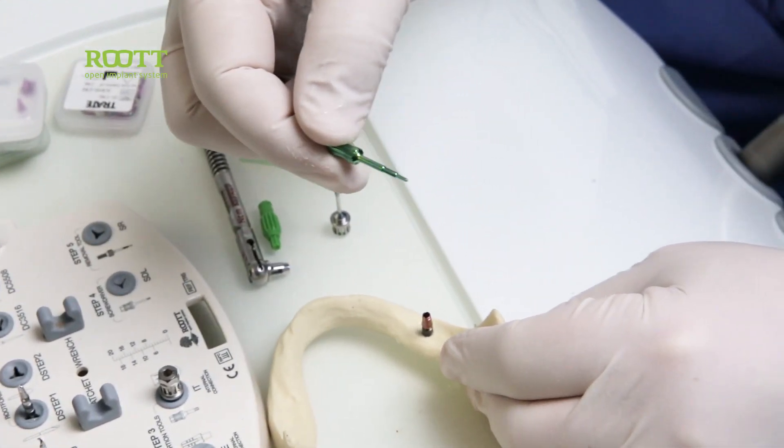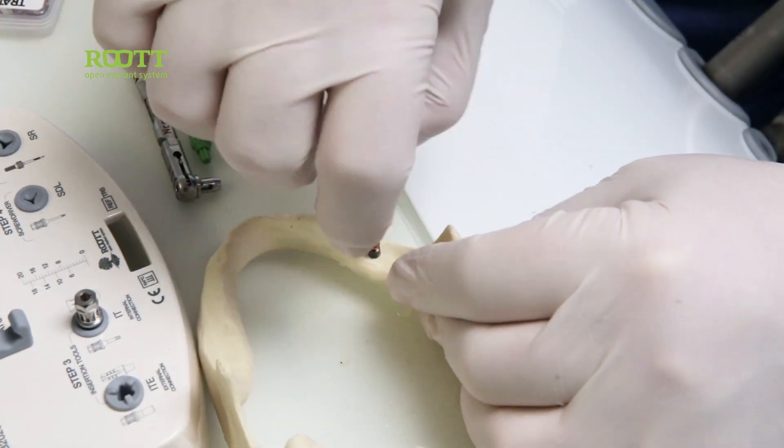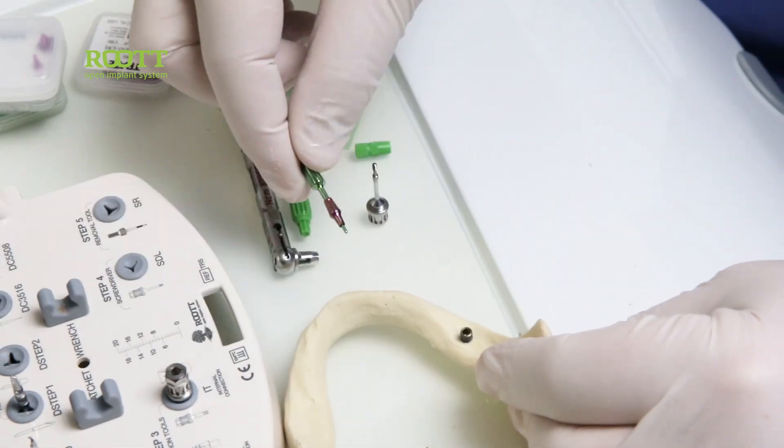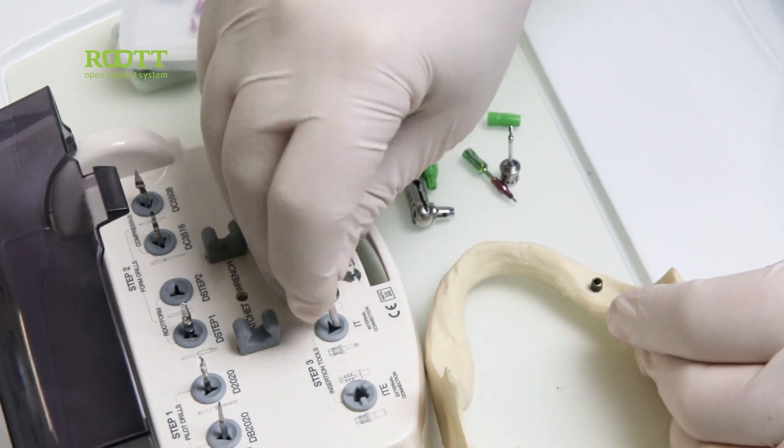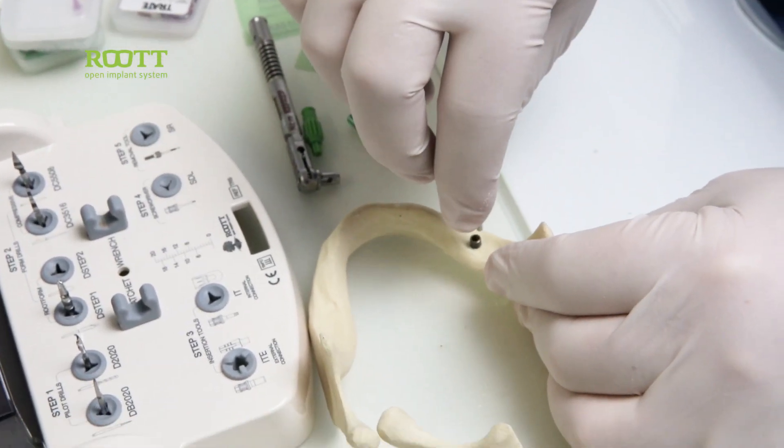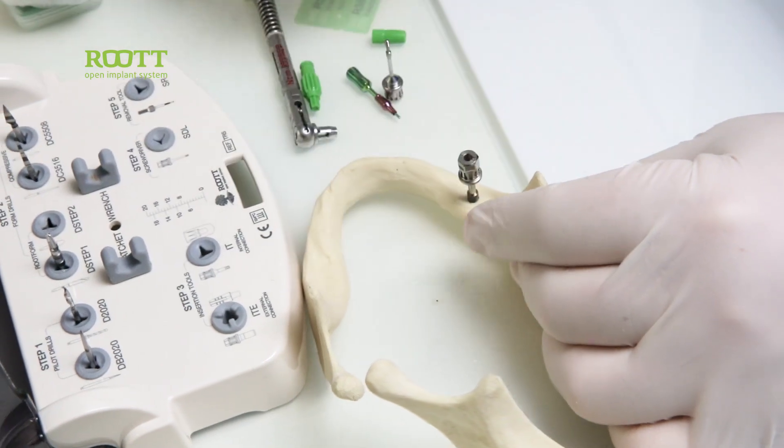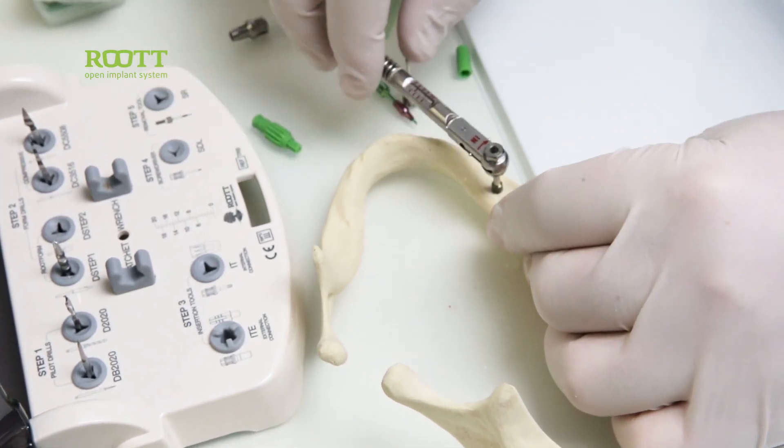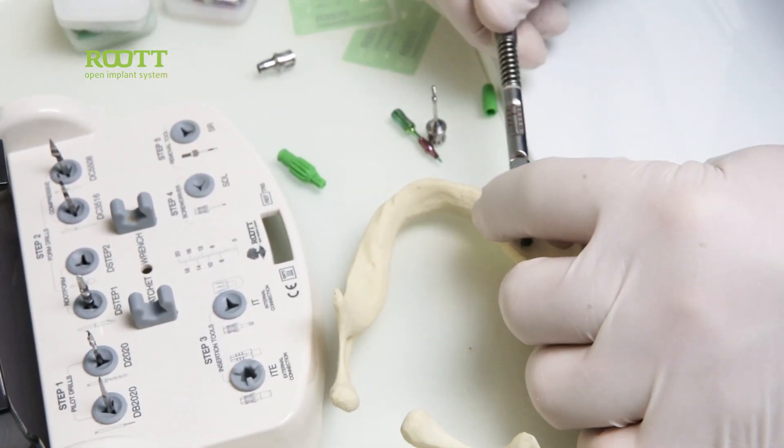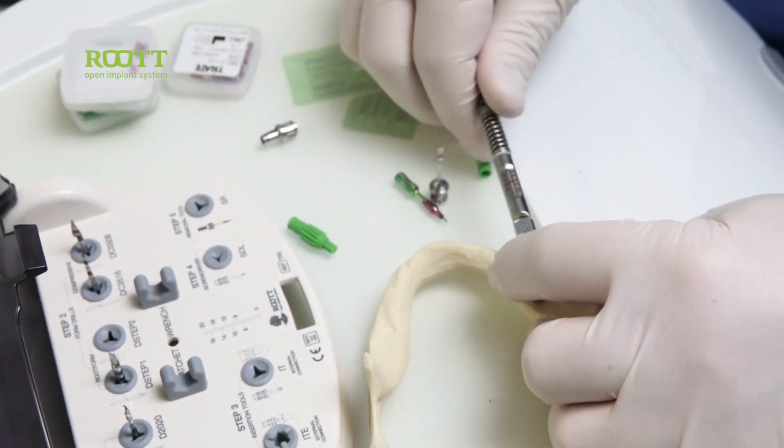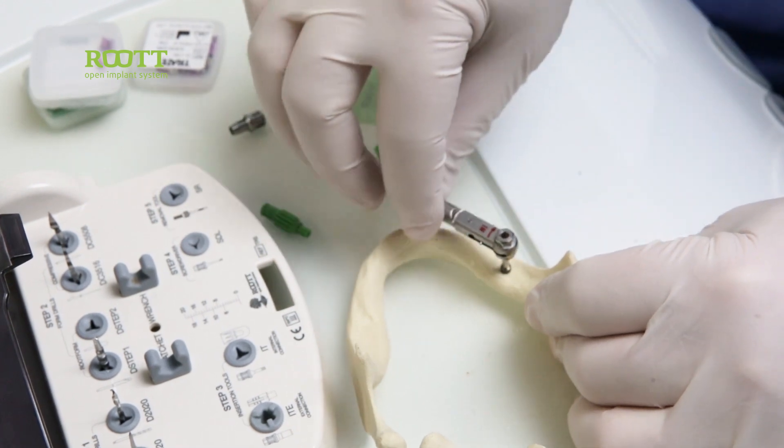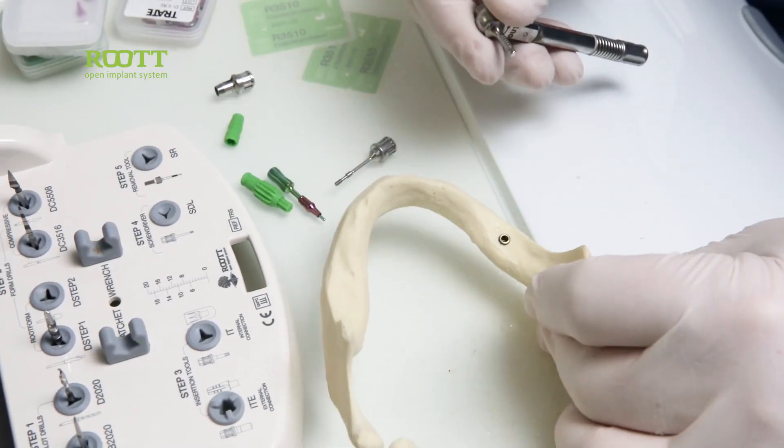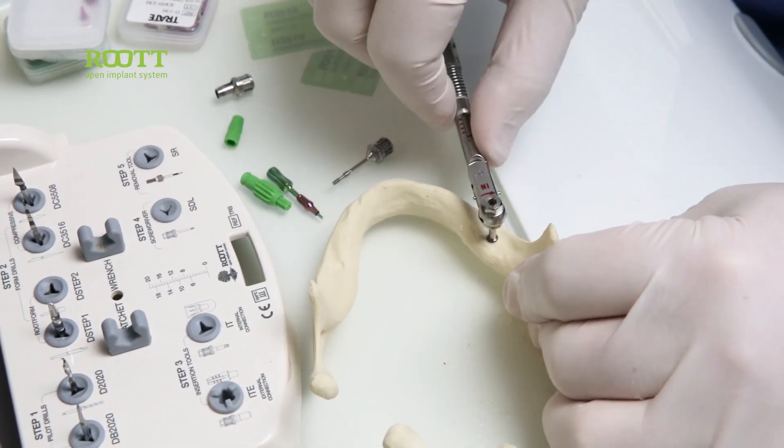Once it's out, we use the abutment extractor. We start screwing until we take the abutment out. Then we use the implant driver, which is going to be fixed on the internal axle of the implant. And we use the ratchet and we start entering our implant. Now the implant arrived to the bone level.